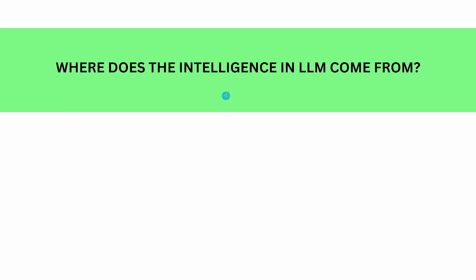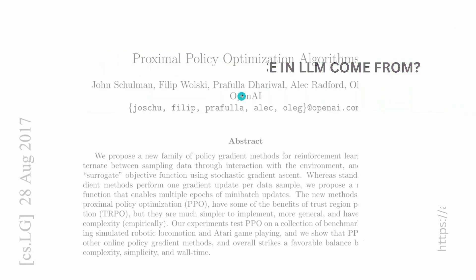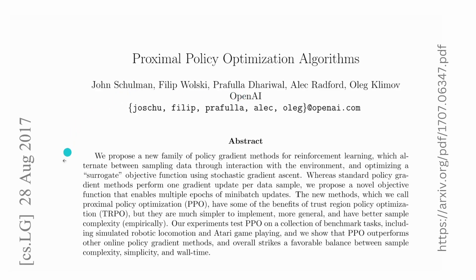You might ask: where does the intelligence come into our LLM model? Up until now it was just thousands of people writing, responding, and providing input. Well, here it is. There was a publication in August 2017 by OpenAI introducing a new proximal policy optimization algorithm — PPO. I don't know if you're familiar with game theory or control theory, but they found another proximal policy optimization algorithm.